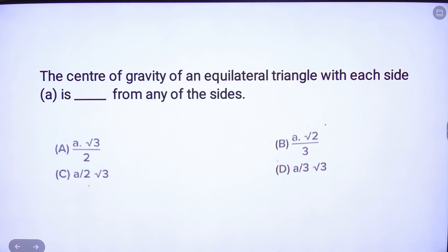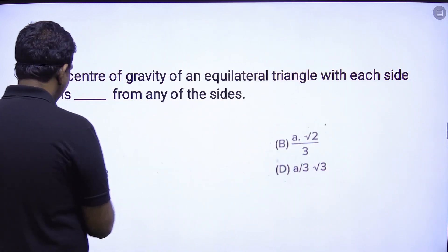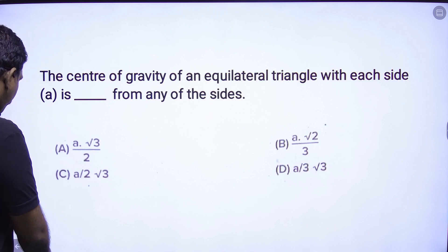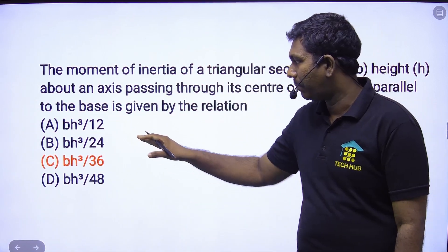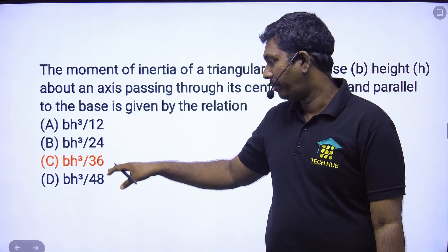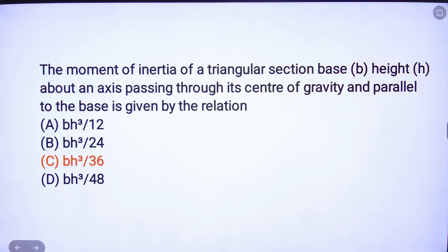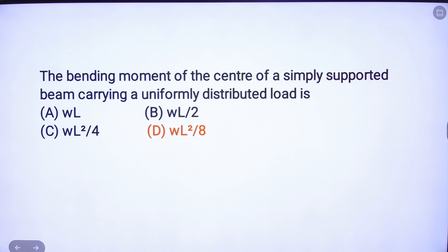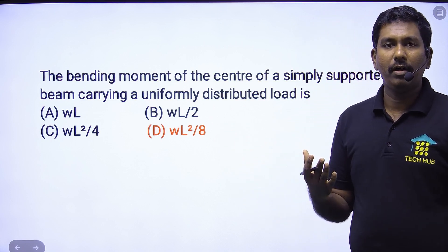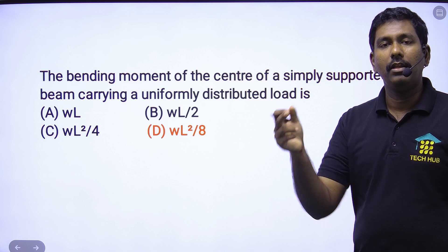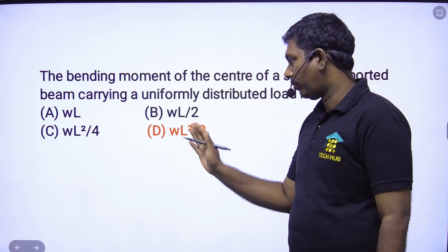The center of gravity of an equilateral triangle with each side A — option C means A root 3 divided by 2 — option C is the correct answer. Next: moment of inertia of a triangular section about the base is BH³/12 — option C is the correct answer. Bending moment at the center of a simply supported beam carrying a UDL is WL²/8 — option D is the correct answer.